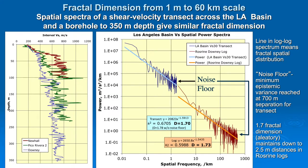If we take that spatial variation along the transect horizontally over 60 kilometers and compute its spatial spectra, we get a blue line in this log-log plot that roughly follows a fractal distribution — a straight line. The slope of that straight line defines the fractal dimension in the log-log plot, and the fractal dimension of the San Gabriel River transect VS-30 values is 1.70.